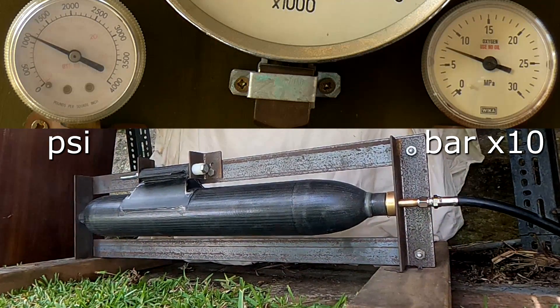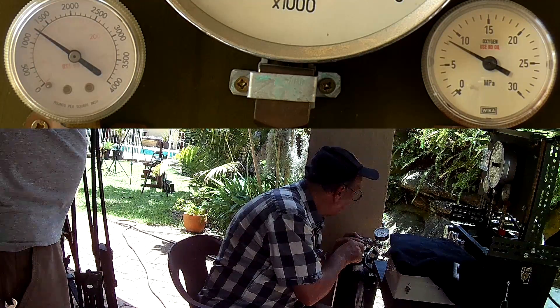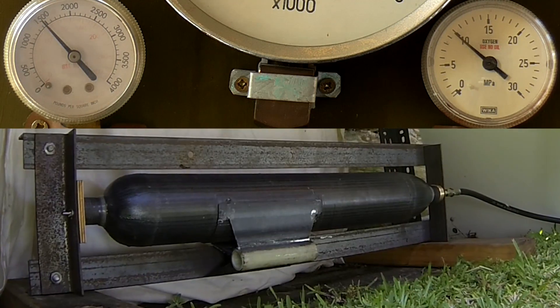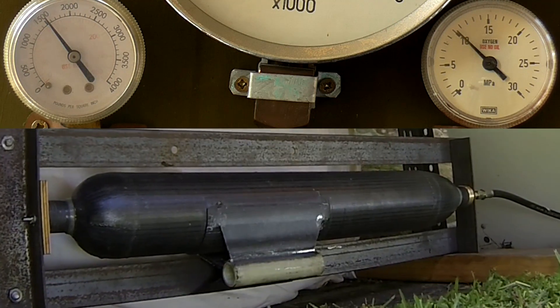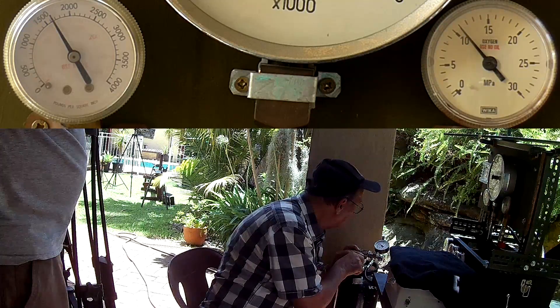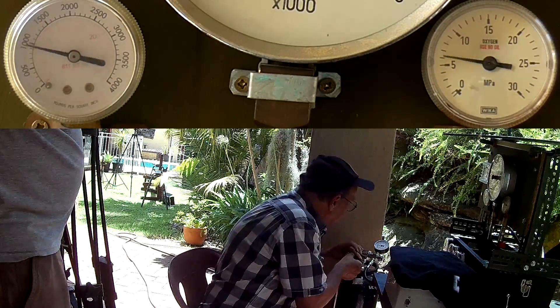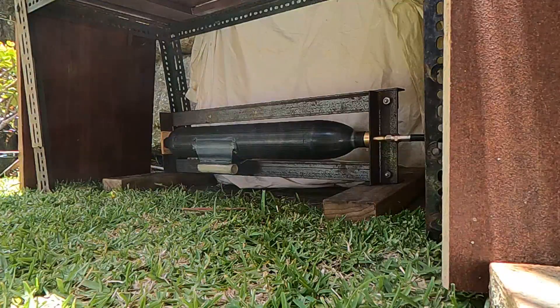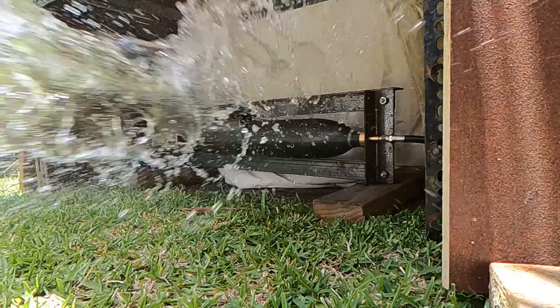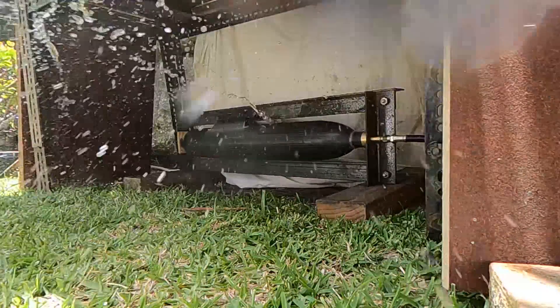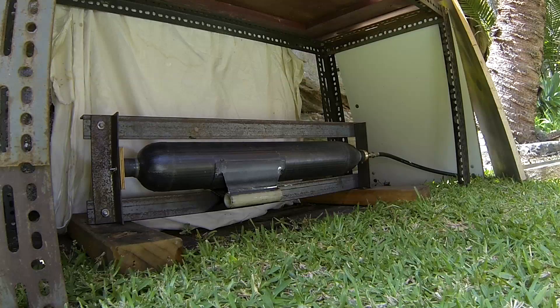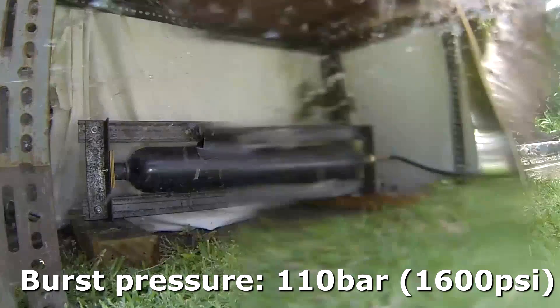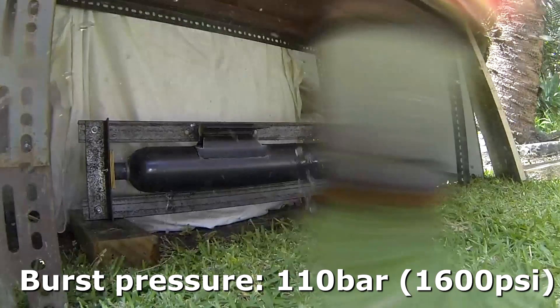One thousand. Twelve hundred. Fourteen hundred. Sixteen hundred. Here are a few slow-mo shots of the burst. You can see the chamber rotates 180 degrees as it bursts. The burst pressure was 110 bar or just a little over 1600 psi.